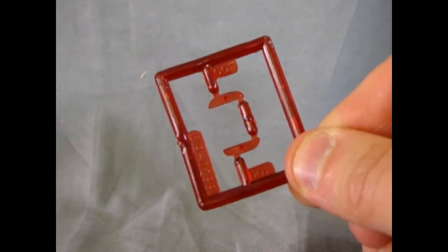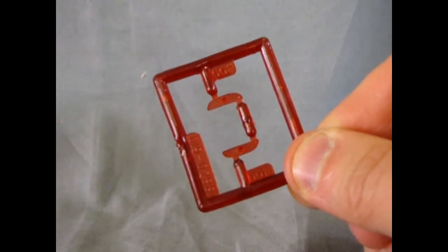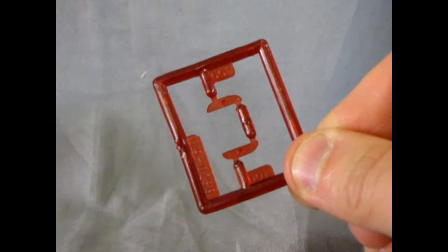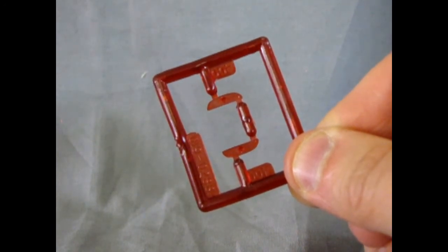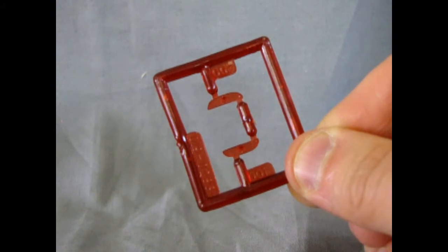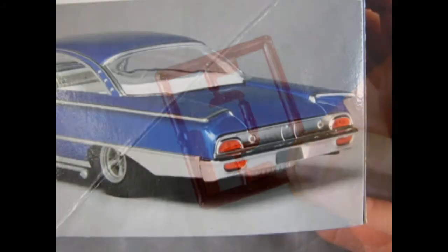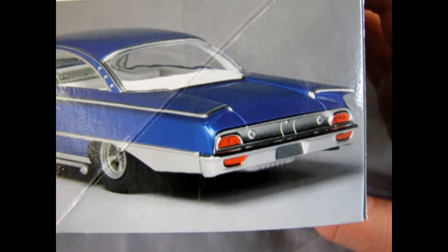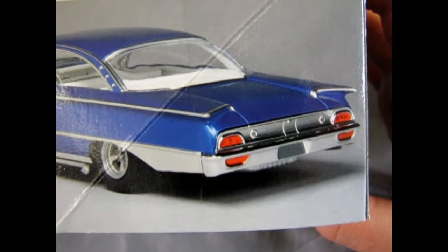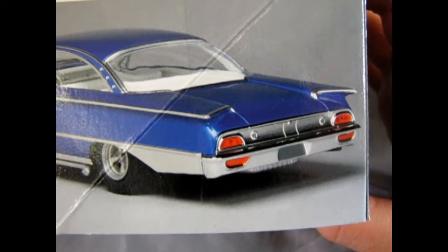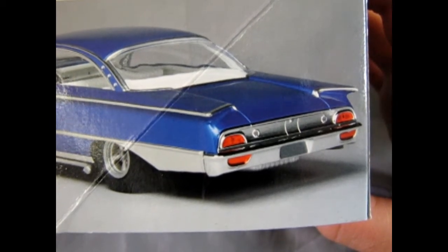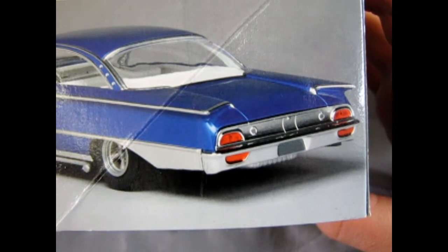Finally, molded in red plastic are the two rear tail lights, which is interesting because the back end of this has four red tail lights but they only had two in the kit. Looking at the box art here, I guess they're not really meant to be four red tail lights. Somebody just painted the backup lights red. So AMT was right by molding in two.